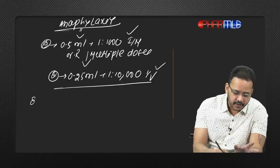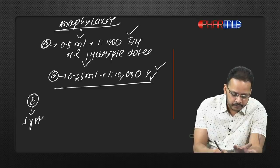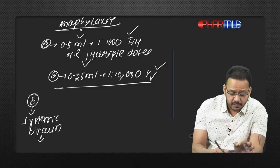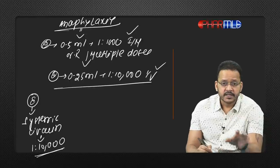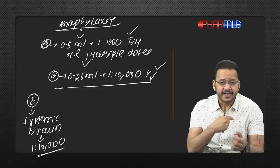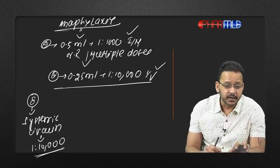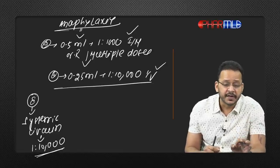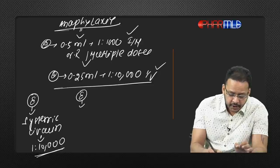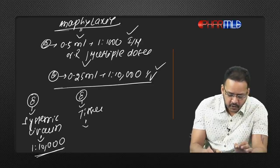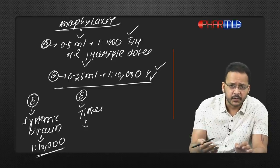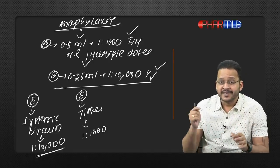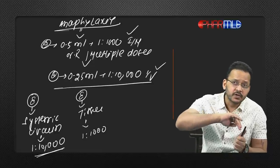If I give epinephrine directly into systemic circulation, I use 1:10,000 dilution — systemic routes like intravenous, intracardiac, intraosseous. If I give it into tissue — not directly into systemic circulation, such as intramuscular, subcutaneous, or endotracheal — I can use 1:2000 because the drug is not given directly into systemic circulation; it would be gradually absorbed.